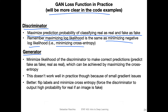Similarly for the generator — in the original paper, the generator minimizes the likelihood of the discriminator making correct predictions. Minimizing likelihood is the same as maximizing the cross entropy. But as we discussed, this is not ideal because of small gradient issues when the discriminator is successful.